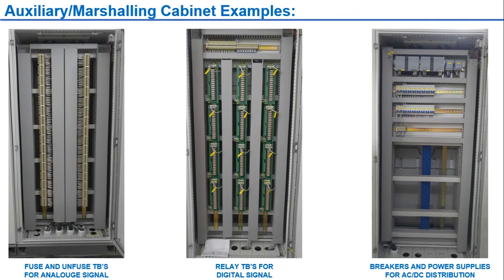Now that we have seen the system cabinet in detail, let's look at some examples of auxiliary or marshalling cabinets. There are generally three types. For analog signals, the panel mostly contains fused and unfused terminal blocks on which field signals are terminated. In the power cabinet, you will normally see breakers, power supplies, and switches for those power supplies, along with terminal blocks for AC and DC distribution.